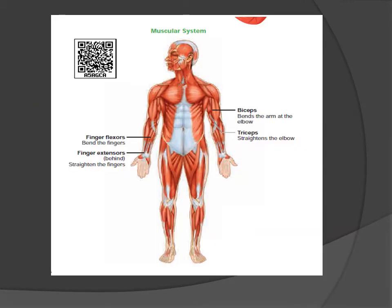Muscular system diagram: Finger flexors bend the fingers; finger extensors straighten the fingers; biceps flex the arm at the elbow; triceps straighten the elbow.